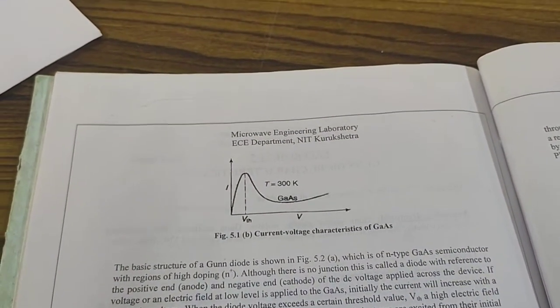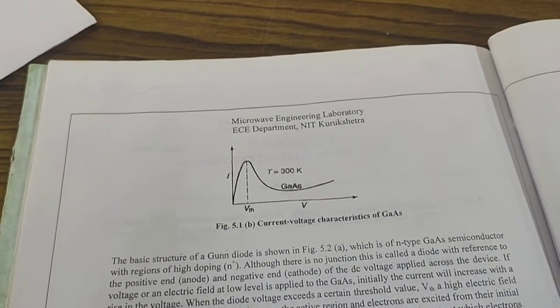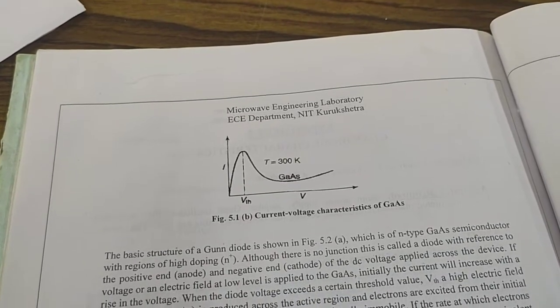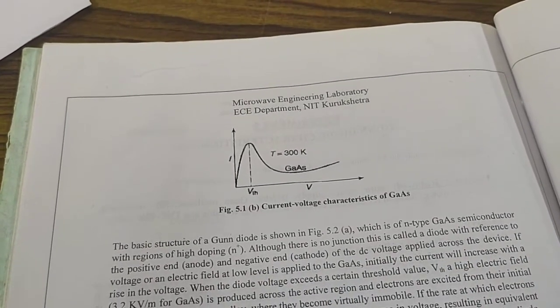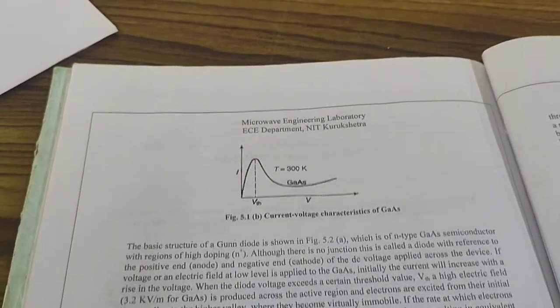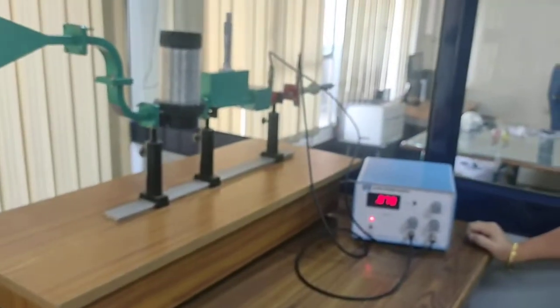This particular region is the negative differential resistance region. Here, it will be delta V upon delta I, which is called the negative differential resistance region. That is one of the important points for this setup.